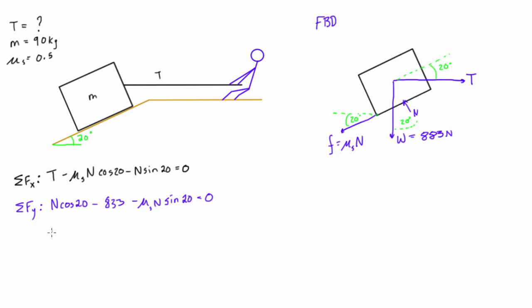Alright. So, we can simplify this a little bit. So, we get n. This is going to all come out. So, we're going to get n times the cos of 20 minus 0.5, right? That's that mu s guy in there times sine 20. And, that's all going to equal positive 833, right? All I did is took that over and pulled out the n.